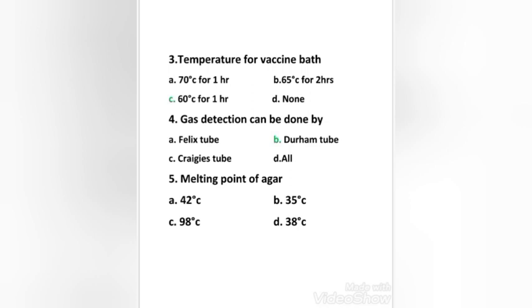Next question: melting point of agar — 42 degrees Celsius, 35 degrees Celsius, 98 degrees Celsius, or 38 degrees Celsius? The right answer is option C, 98 degrees Celsius.